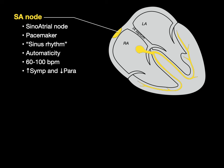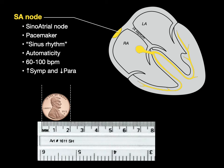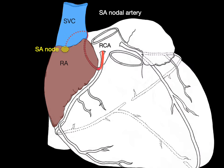We can increase that rate through sympathetic innervation or decrease it through parasympathetic innervation. The SA node is about half the size of a penny, and its blood supply comes through the sinoatrial nodal artery, a branch off the right coronary.